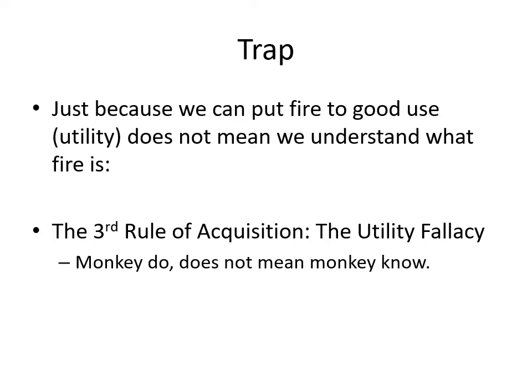Even if we could say this is all nuclear forces, then what are nuclear forces? It's a never-ending layer of onion you have to peel back. The third rule of acquisition is very salient about this point — it's called the utility fallacy. The primary clause of the utility fallacy is: monkey do does not mean monkey know. Just because we can put all this stuff to great use is not proof we understand the fundamental mechanism of nature that's causing it to be true. All we are doing is mimicking what we see. Science is nothing more than monkey see, monkey do. It doesn't mean monkey know.